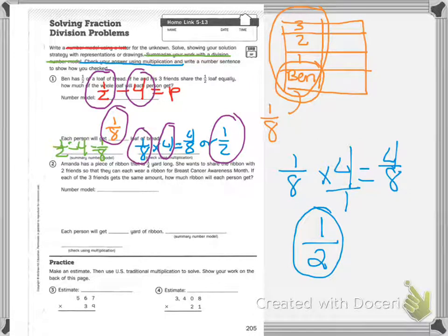Number two says Amanda has a piece of ribbon that is one fourth yard long. She wants to share the ribbon with two friends so they can each wear a ribbon for breast cancer awareness month. If each of the three friends gets the same amount, how much ribbon will each person get?